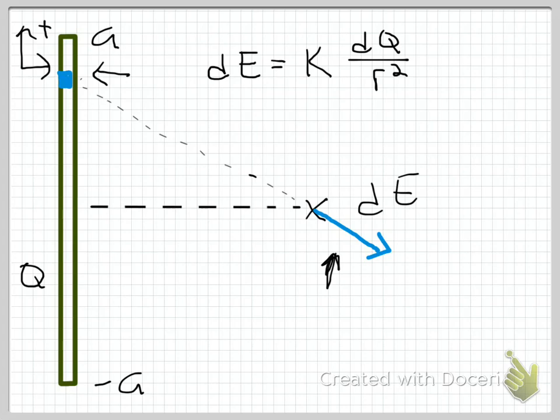And it's going to be equal to K, which is our 1 over 4πε₀ constant, times the differential charge, which is the amount of charge on my differential element right here. This is my dQ over r squared. Now, what's r squared in this case? R is just the distance from the source to the point of observation.